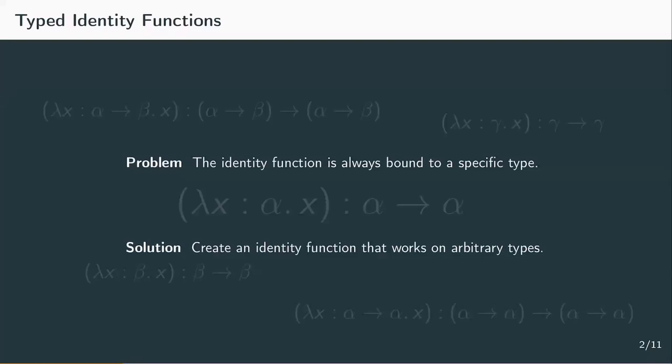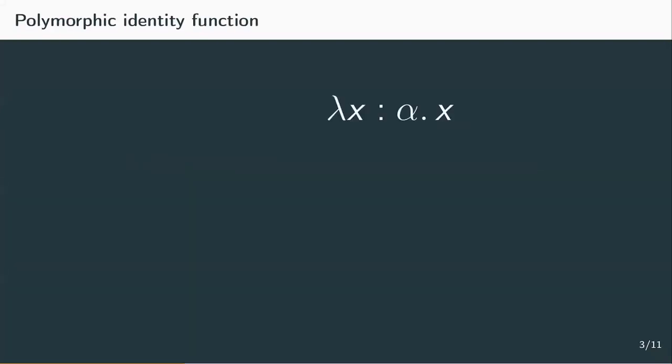This is a form of polymorphism called parametric polymorphism. With parametric polymorphism, terms can be constructed so that they handle inputs identically without depending on their type. The idea is to allow abstraction not only over term variables, but also over type variables.